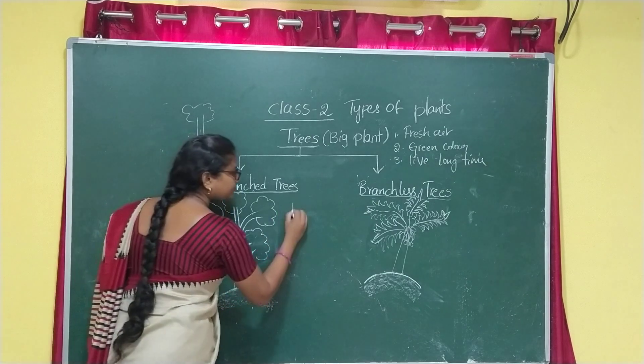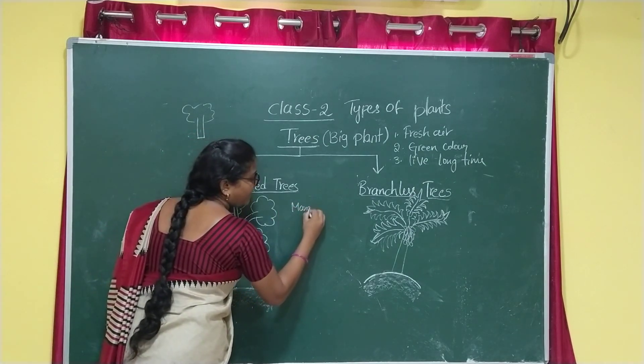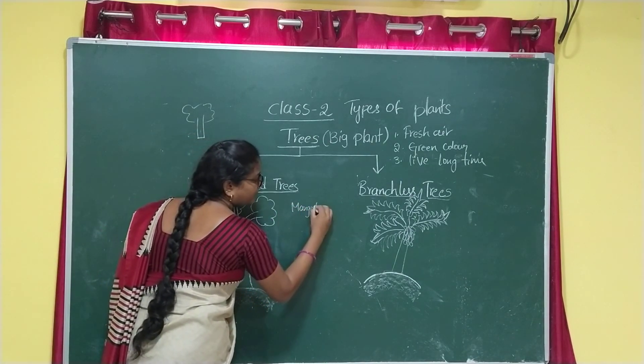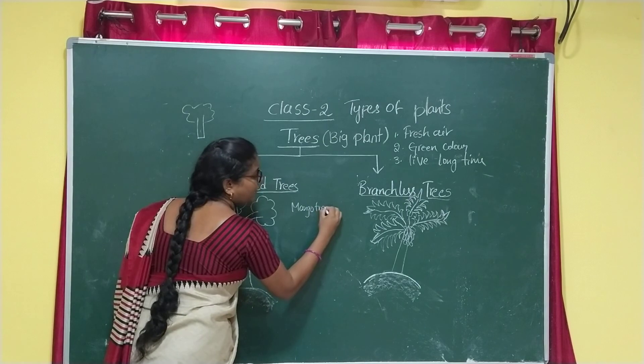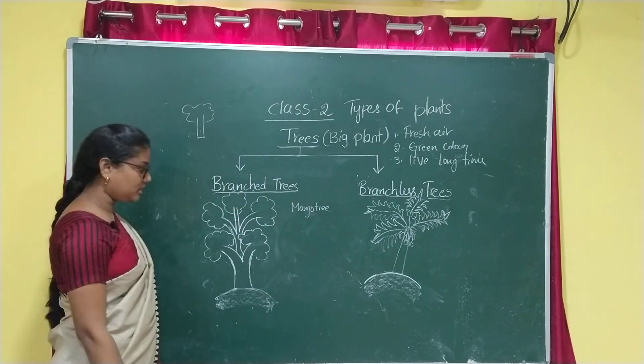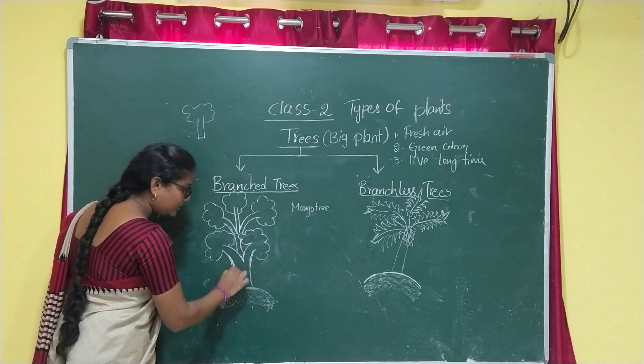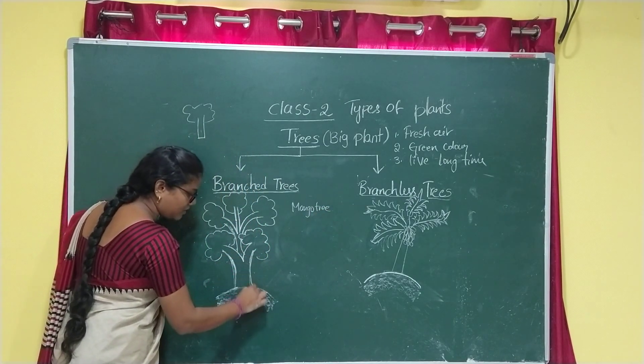Trees are divided into two parts. One is a branched tree and another one is a branchless tree. For example, the mango tree — mango tree is a branched tree. Look at this picture.